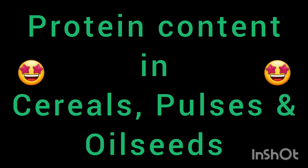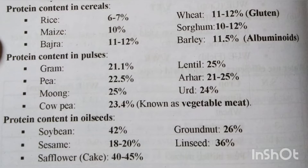We will learn about the protein content in cereals, pulses, and oil seeds. Rice: 6-7%, Maize: 10%, Bajra: 11-12%, Wheat: 11-12%, Sorghum: 10-12%, Barley: 11.5%. So in cereals, the protein content ranges approximately from 6-7% to 11-12%.